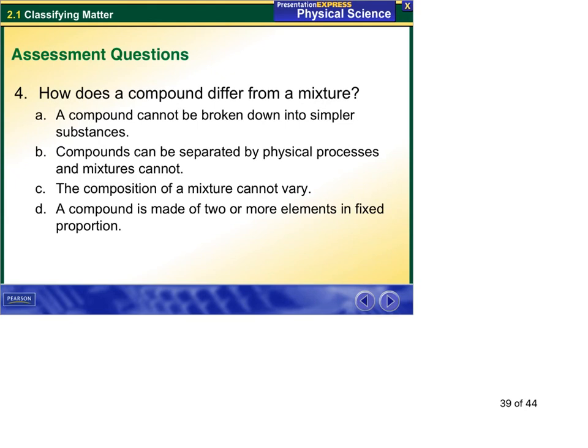And more questions. How does a compound differ from a mixture? And a compound is made up of two or more elements in fixed proportions. Looking at some of the other choices of why they're wrong: composition of a mixture cannot vary.